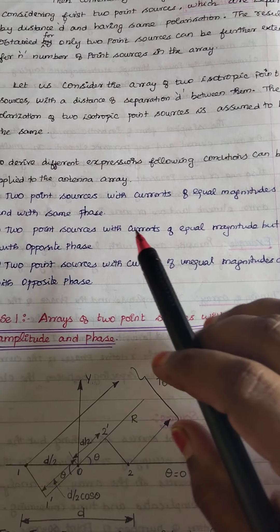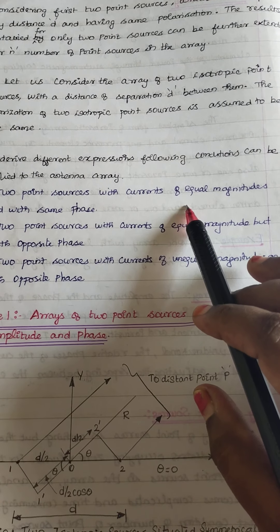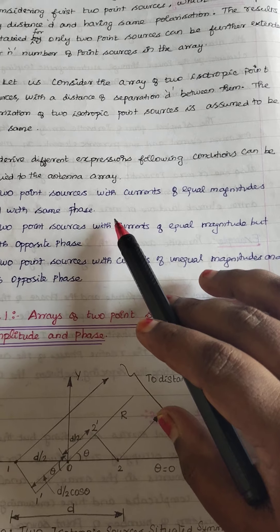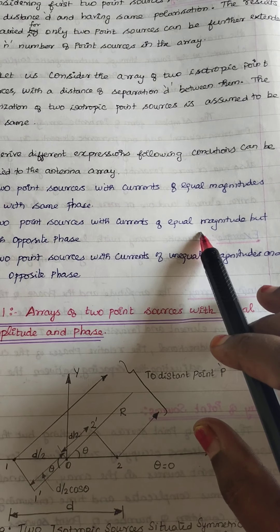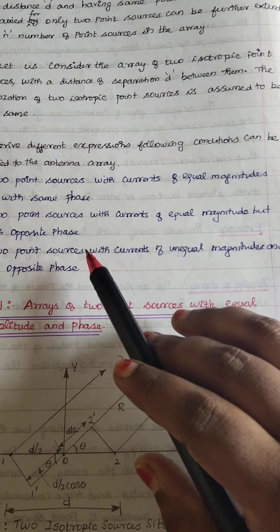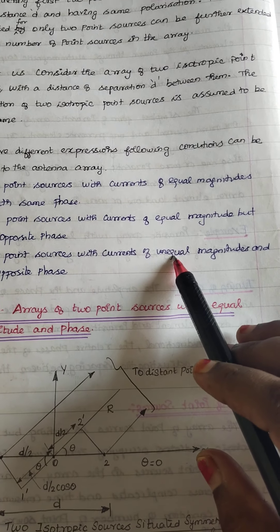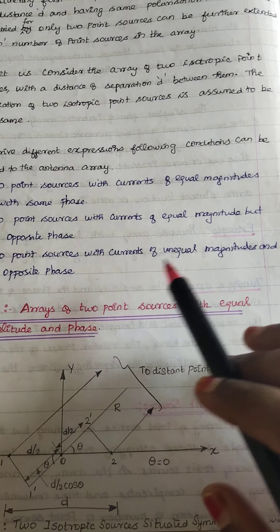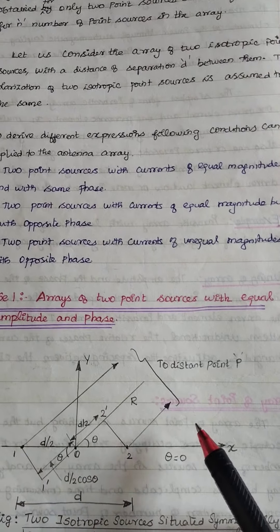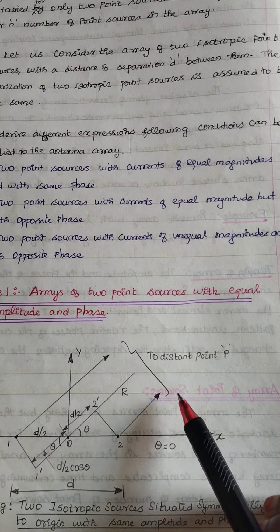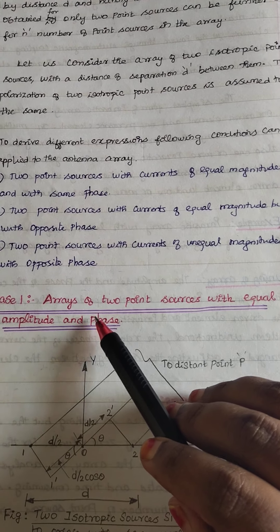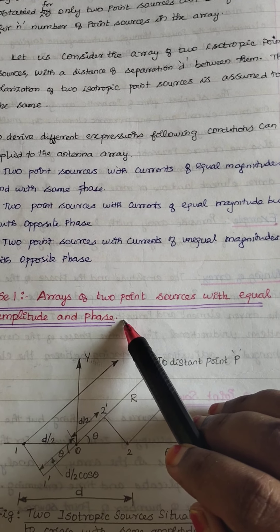The three cases are: first, two point sources with equal magnitude and same phase; second, equal magnitude but opposite phase; third, unequal magnitude and opposite phase. In this video, we are going to see the array of two point sources with equal magnitude and phase.